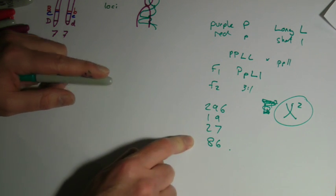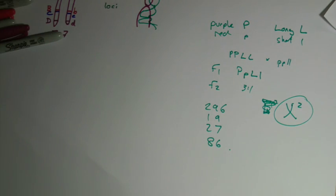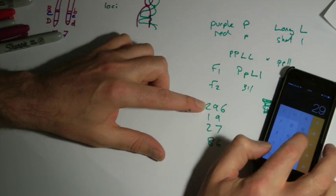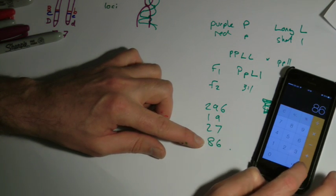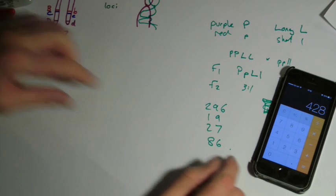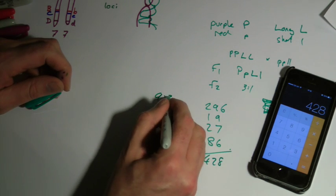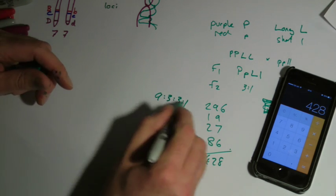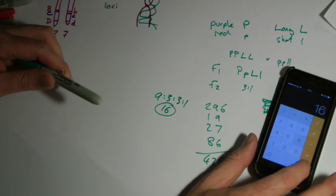Could we do something to tell if this is what we actually expect to see? The way to approach this kind of problem is to look at your totals, so I've got 296 plus 19 plus 27 plus 86 plants, so I've got 428 in total. And if I wanted to know what my 9-3-3-1 ratio would be, 9 plus 3 plus 3 plus 1 is 16. So I divide my total number by 16.